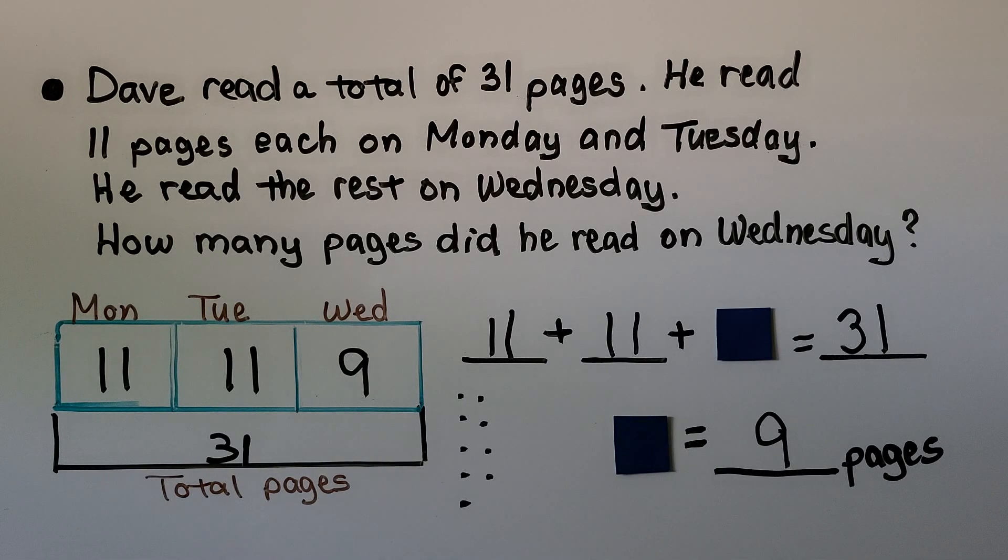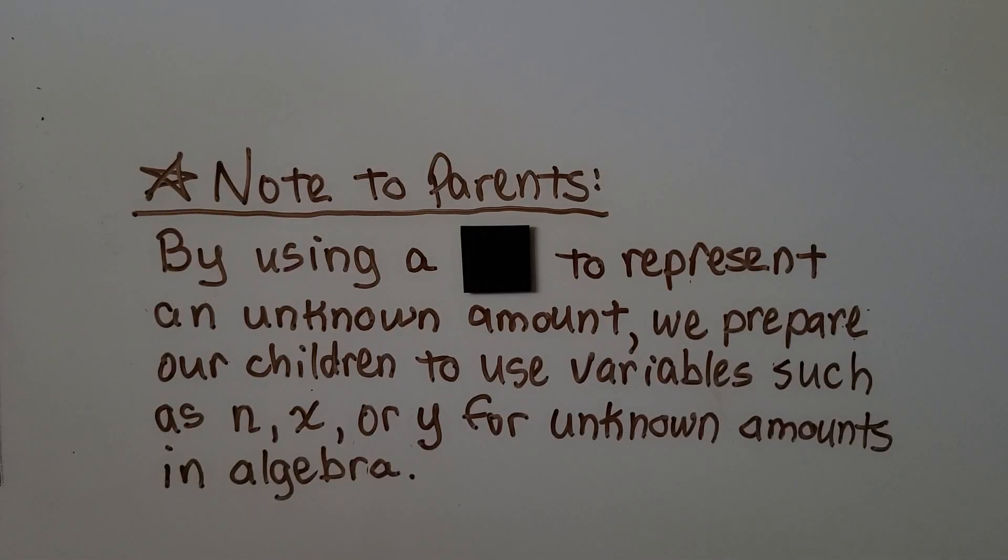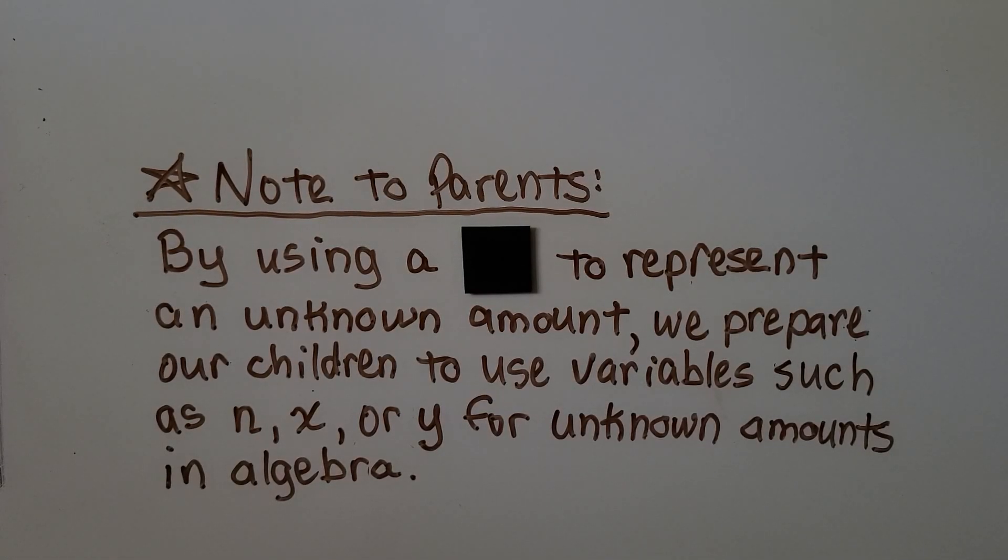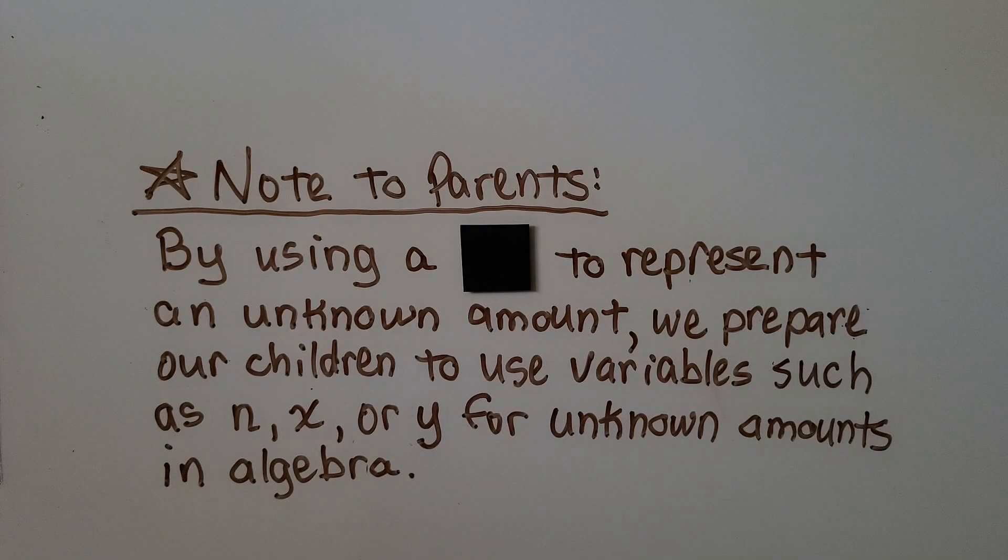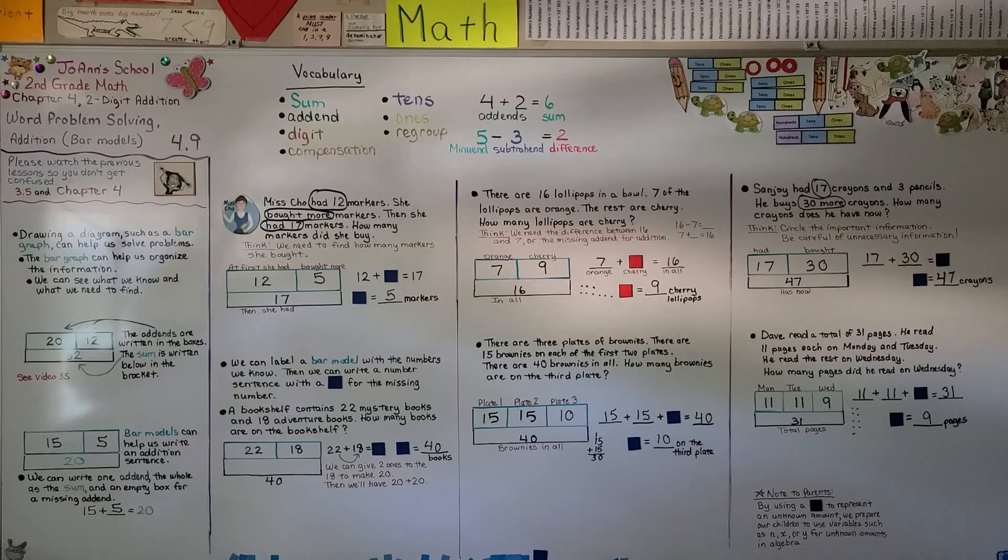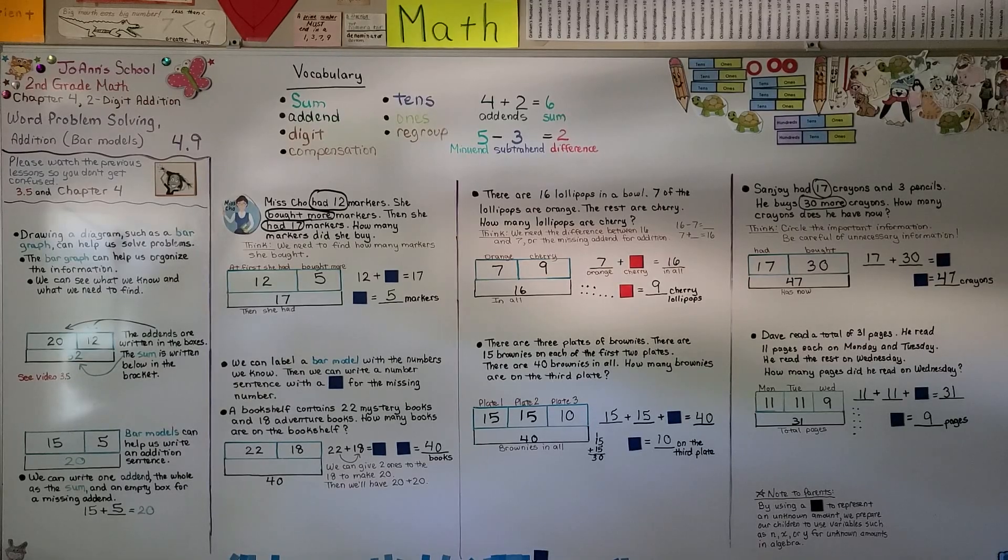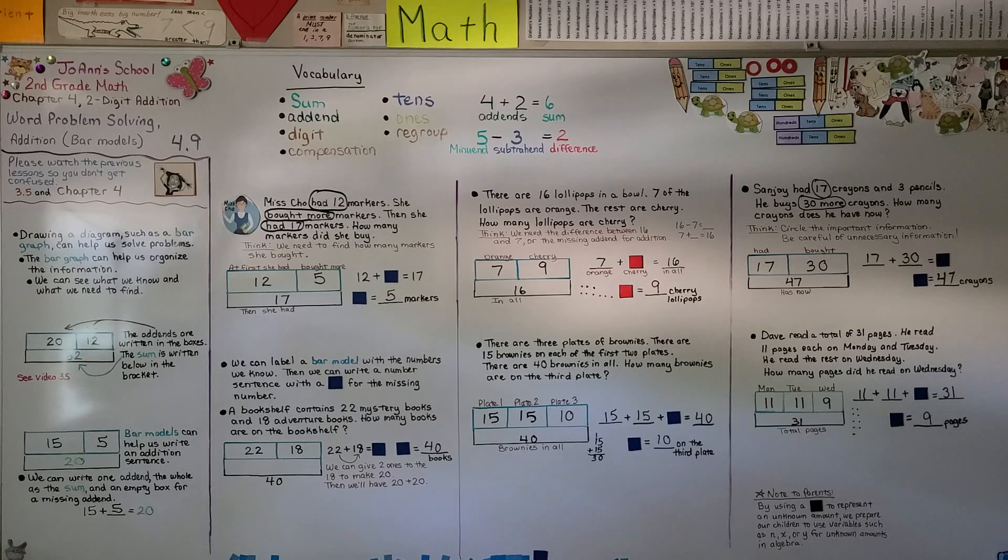We can use all types of diagrams to help us. We can draw quick pictures. We can use a bar graph or bar model. This is a quick note to the parents. By using a square like this to represent an unknown amount, we prepare our children to use variables such as n, x, or y for unknown amounts in algebra. And that's coming up sooner than you think. In third grade, we're going to use the letter n to represent an unknown amount.